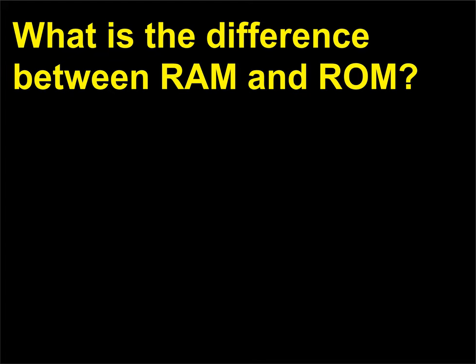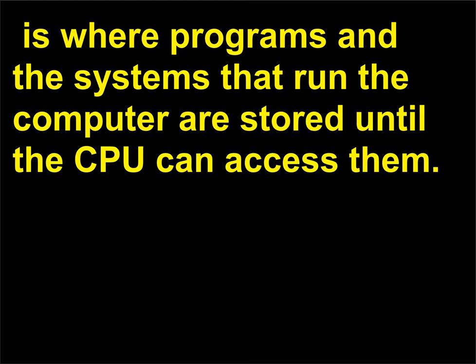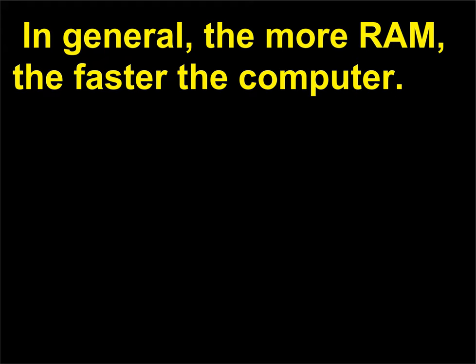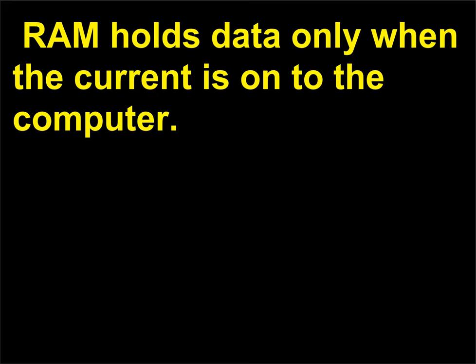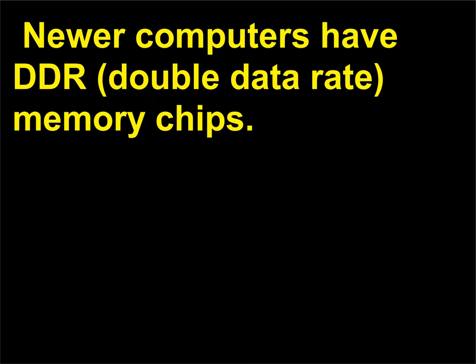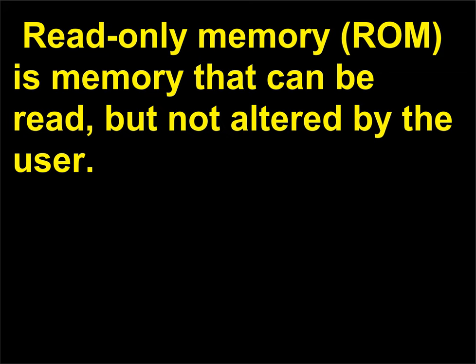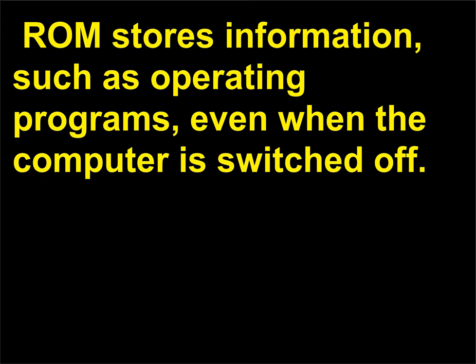What is the difference between RAM and ROM? Random Access Memory (RAM) is where programs and the systems that run the computer are stored until the CPU can access them. RAM may be read and altered by the user. In general, the more RAM, the faster the computer. RAM holds data only when the current is on. Newer computers have DDR (double data rate) memory chips. Read-only memory (ROM) is memory that can be read but not altered by the user. ROM stores information, such as operating programs, even when the computer is switched off.